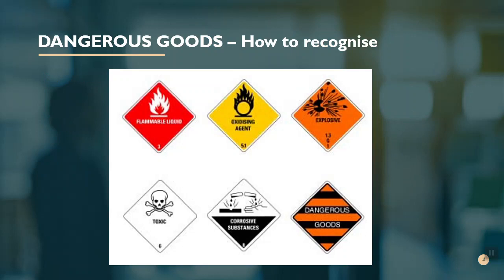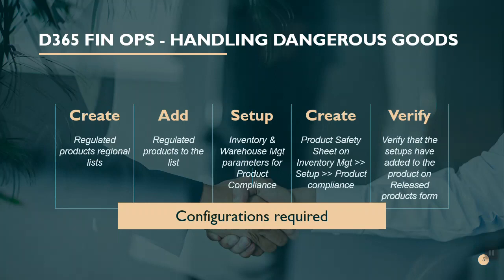You can clearly identify dangerous goods by icons seen on shipments. To set up dangerous goods and provide additional documentation inside D365 FinOps, these are the required configurations: first we create a regulated product regional list, then we add the regulated products into that regional list, then we go to Inventory and Warehouse Management parameters on the product compliance tab and set up parameters, and finally do product compliance settings on the product safety sheet.